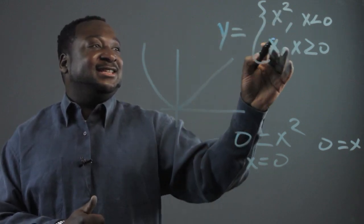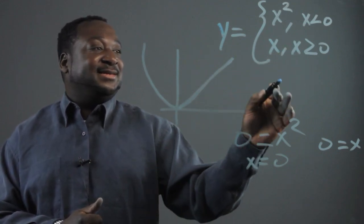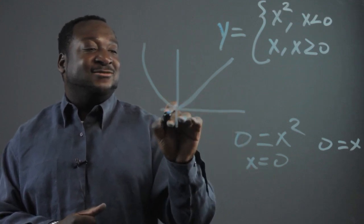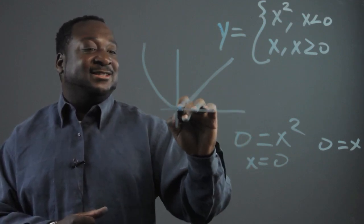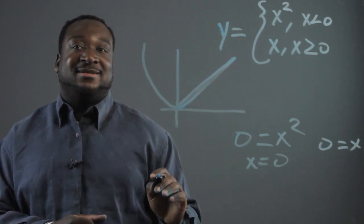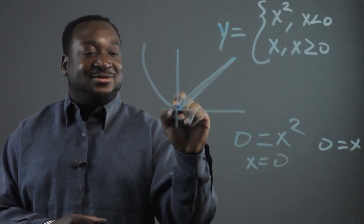In this function here, since x is equivalent to 0 when y equals 0, we can see that there's only one x-intercept, and the y-intercept is at this point here.